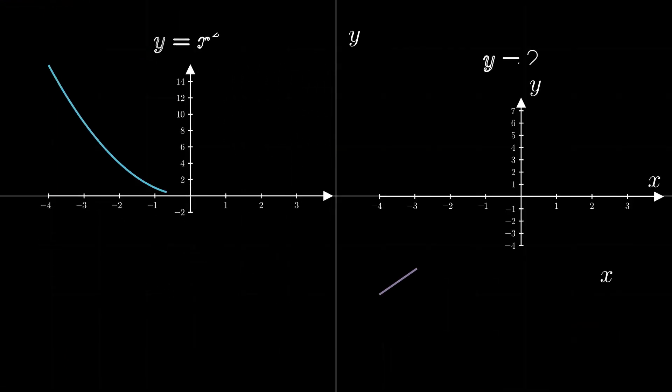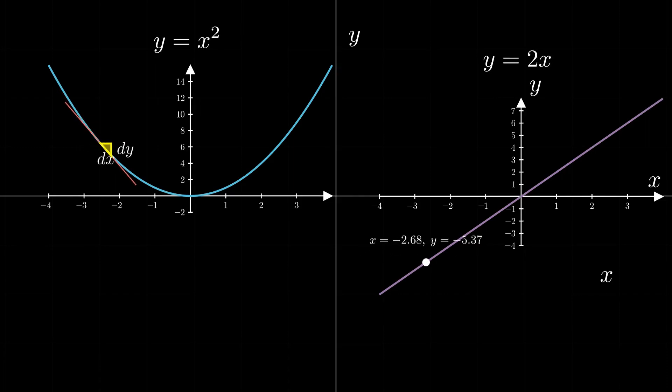For our parabola example, here is the graph of the function showing its slope. As you can see, the value of slope changes linearly as the value of x changes.